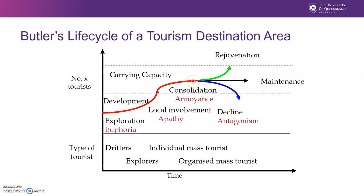Some destinations will try to continue on this trajectory, and it will actually result in declining. This particularly relates to over-tourism. This often happens when destinations have too many people coming in and can't accommodate all of them. When tourists greatly outnumber the locals, that is when decline starts to happen — the locals tend to get really angry because tourists are encroaching on their lifestyle, and the destination goes into decline.